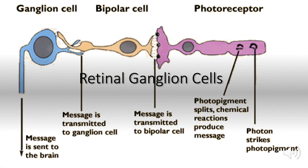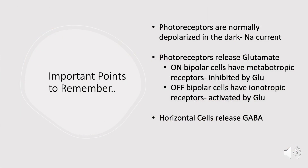Hello everyone, welcome to the channel. Today we're going to be looking at retinal ganglion cells — things like on-center off-center, on-surround and off-surround bipolar cells. We're going to take each of those scenarios and work through them individually. Hopefully by the end of this video all of your confusion on that topic will be cleared up.